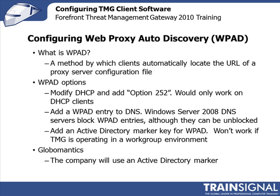However, Windows Server 2008 DNS servers block WPAD entries, although you can reverse this blocking and make it work. Microsoft considers the most secure way in an Active Directory environment is to add what's called an Active Directory marker key for WPAD. This will not work if Threat Management Gateway is operating in a workgroup environment. Fortunately for GlobalMantics, the Threat Management Gateway system is operating in a domain environment, so they're going to use the Active Directory marker option to configure Web Proxy Autodiscovery.